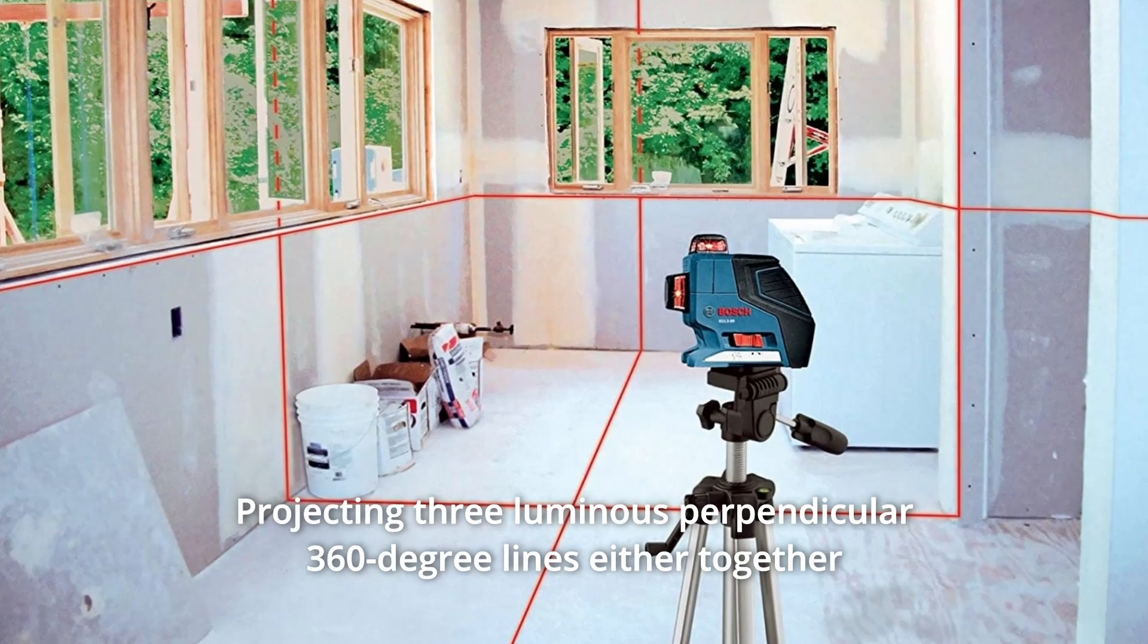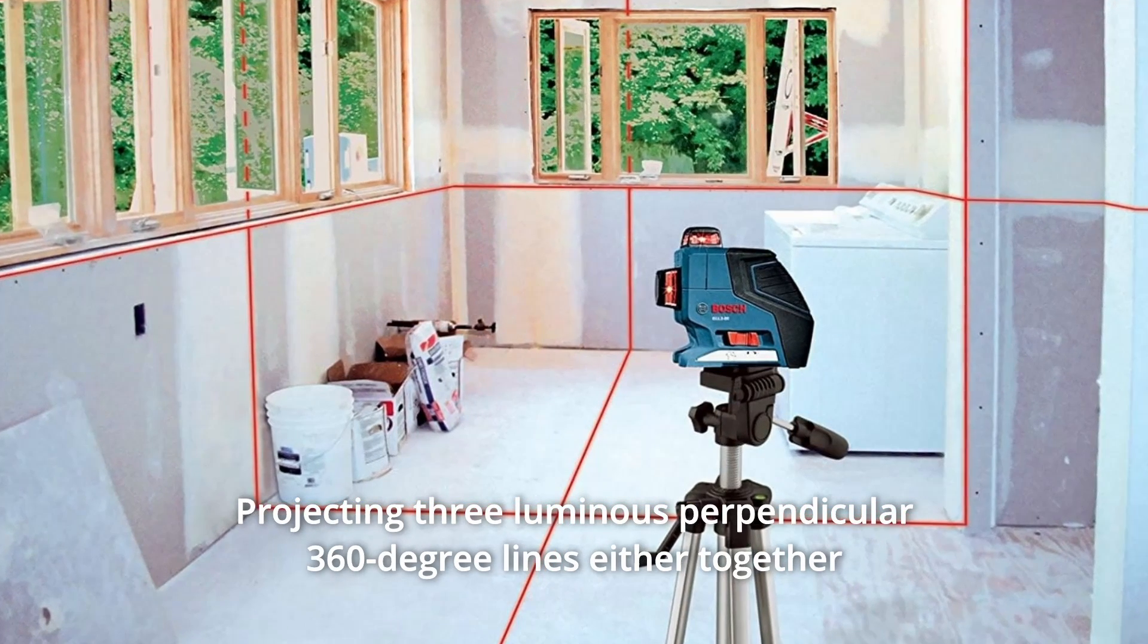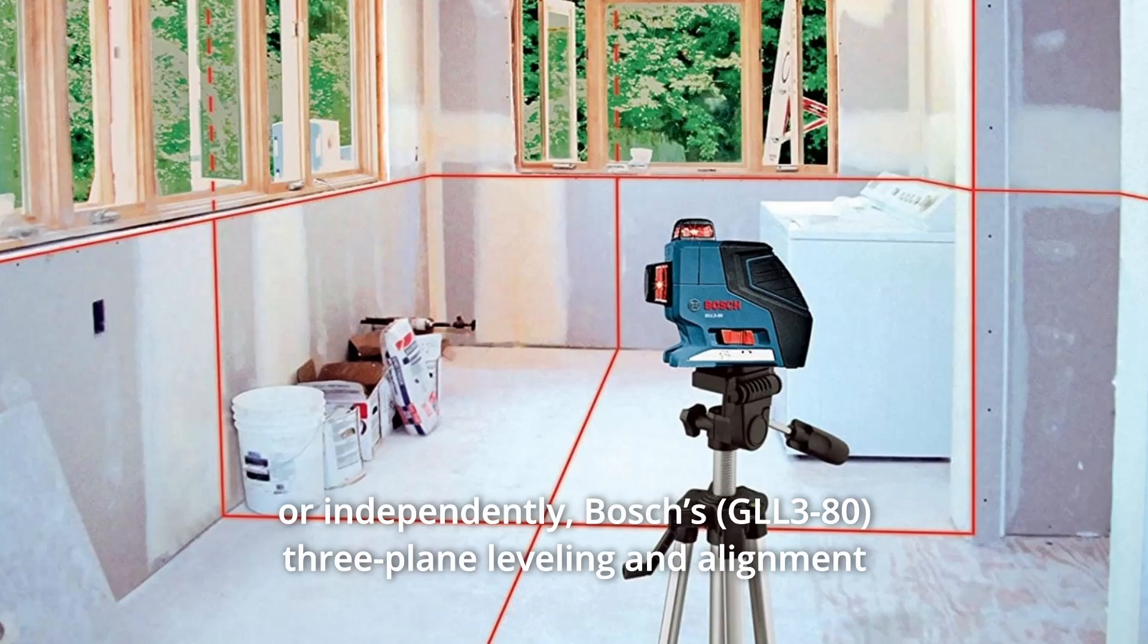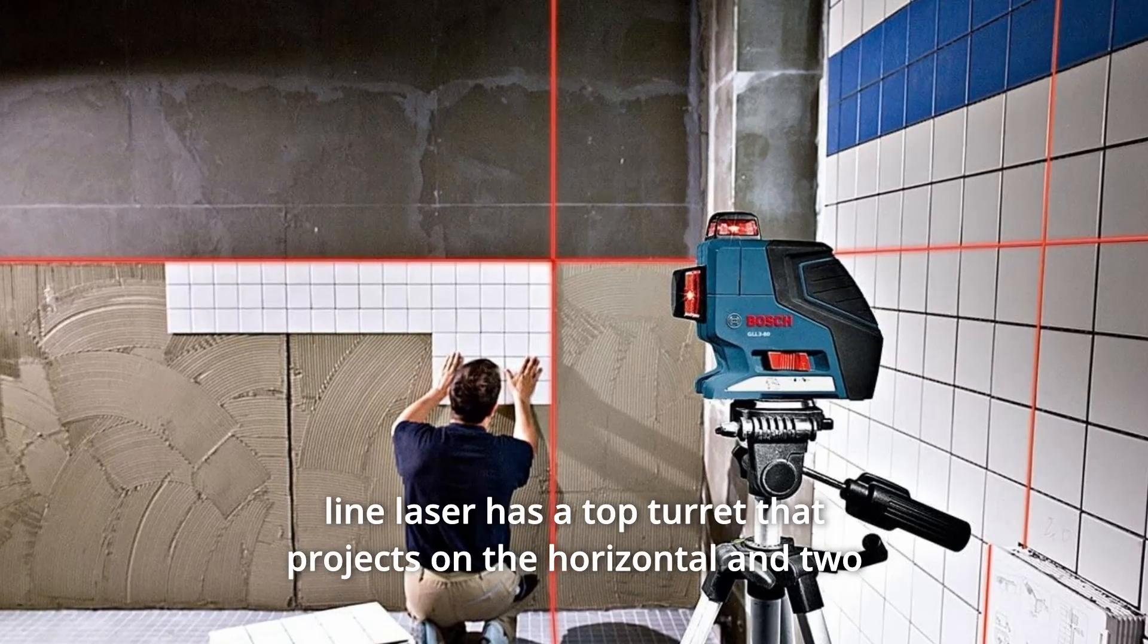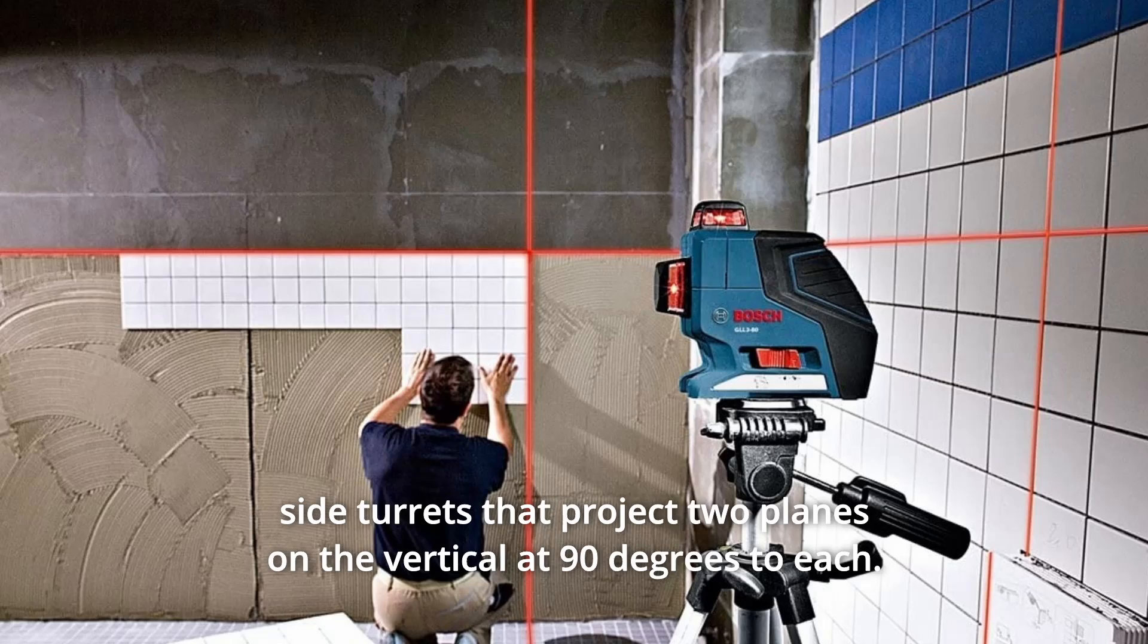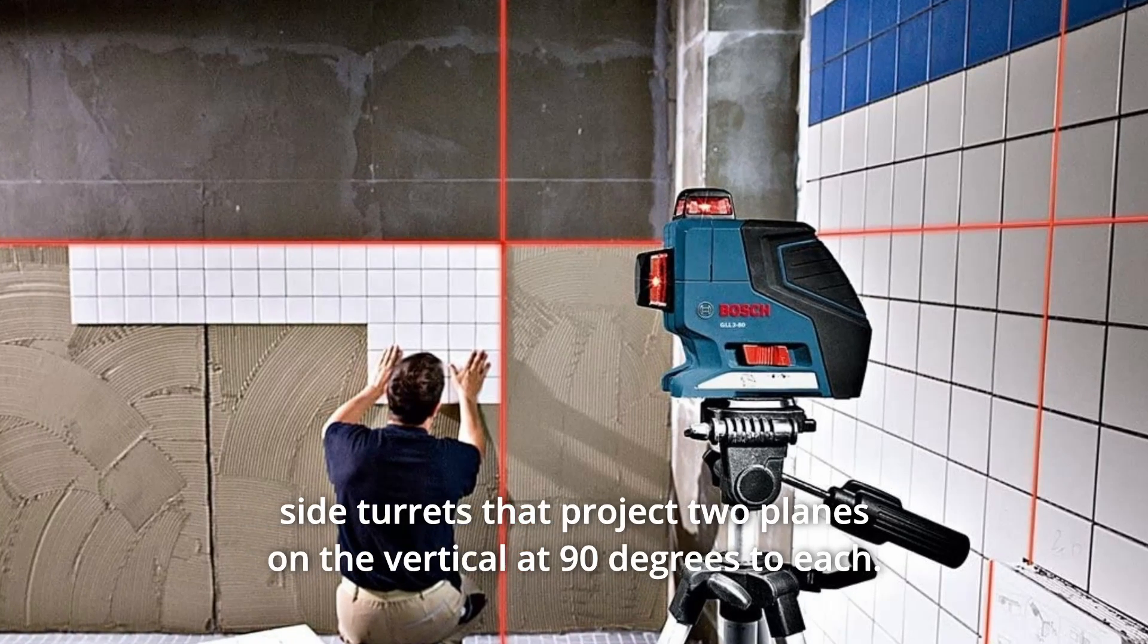Projecting three luminous perpendicular 360-degree lines either together or independently, Bosch's three-plane leveling and alignment line laser has a top turret that projects on the horizontal and two side turrets that project two planes on the vertical at 90 degrees to each.